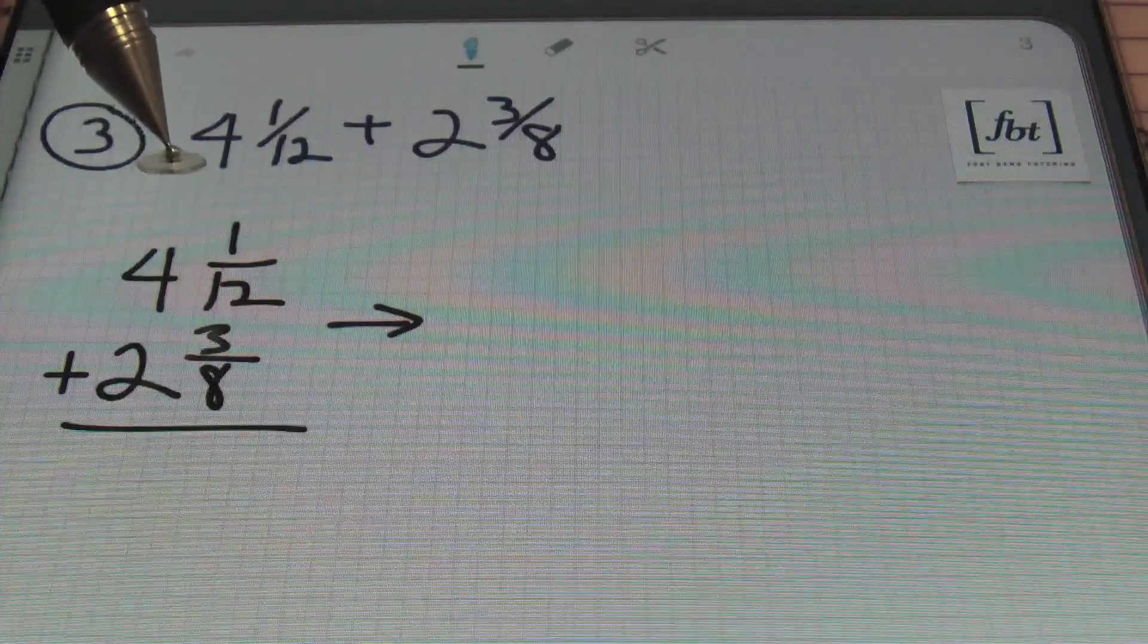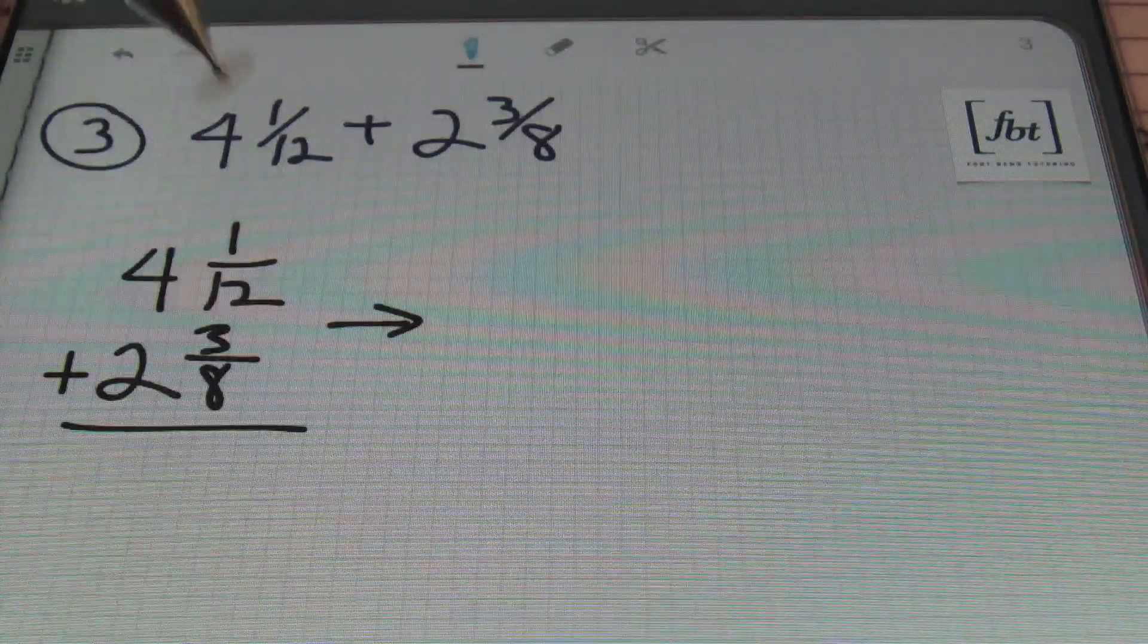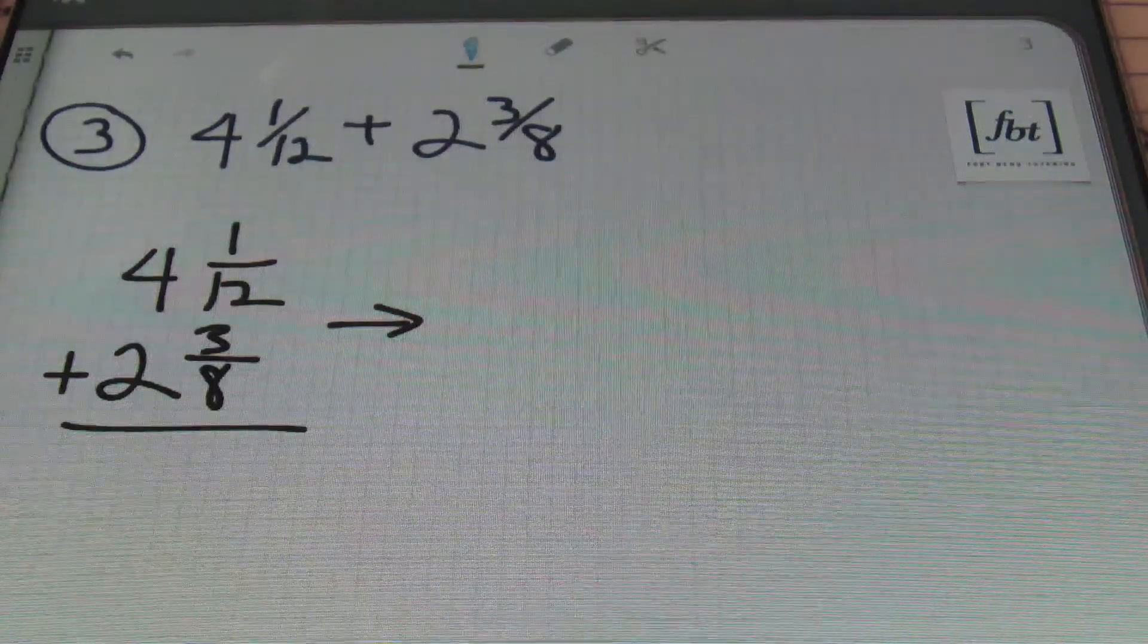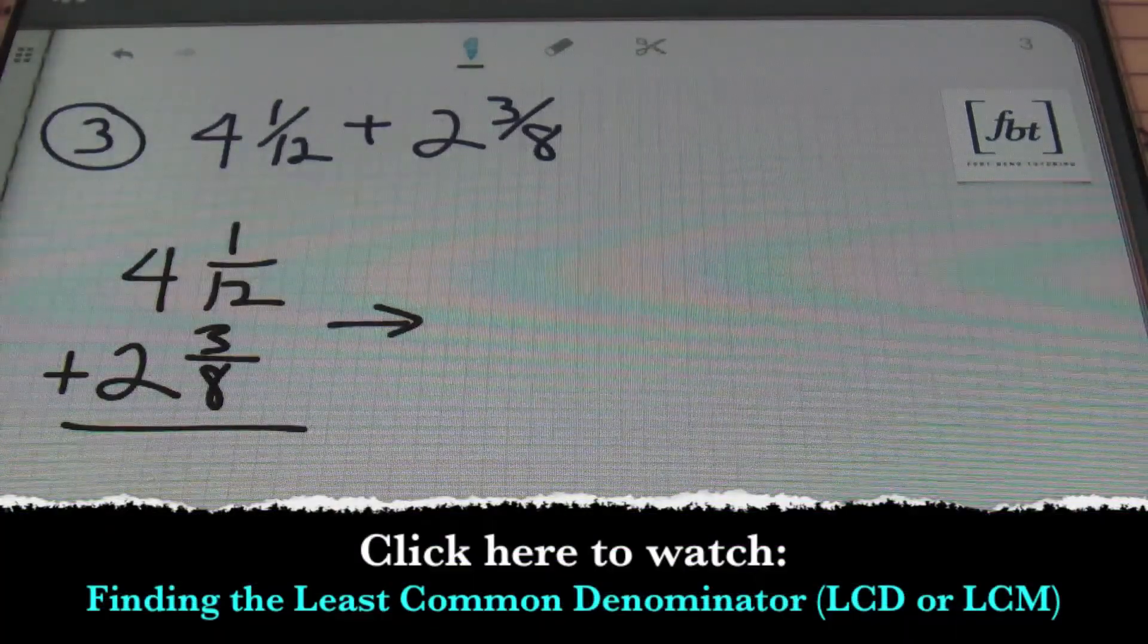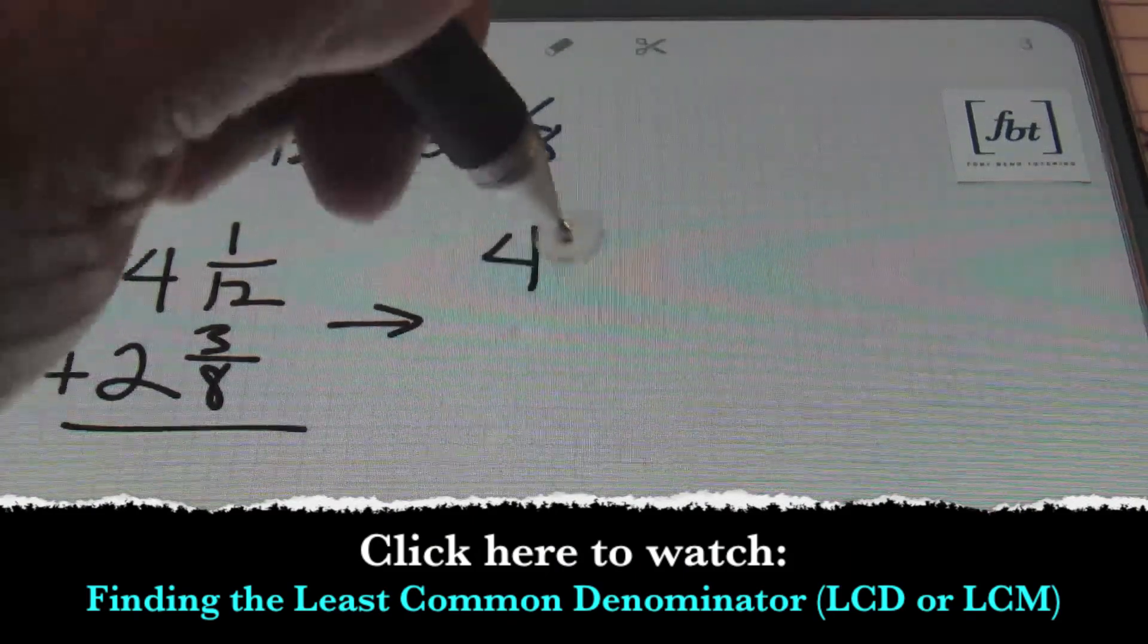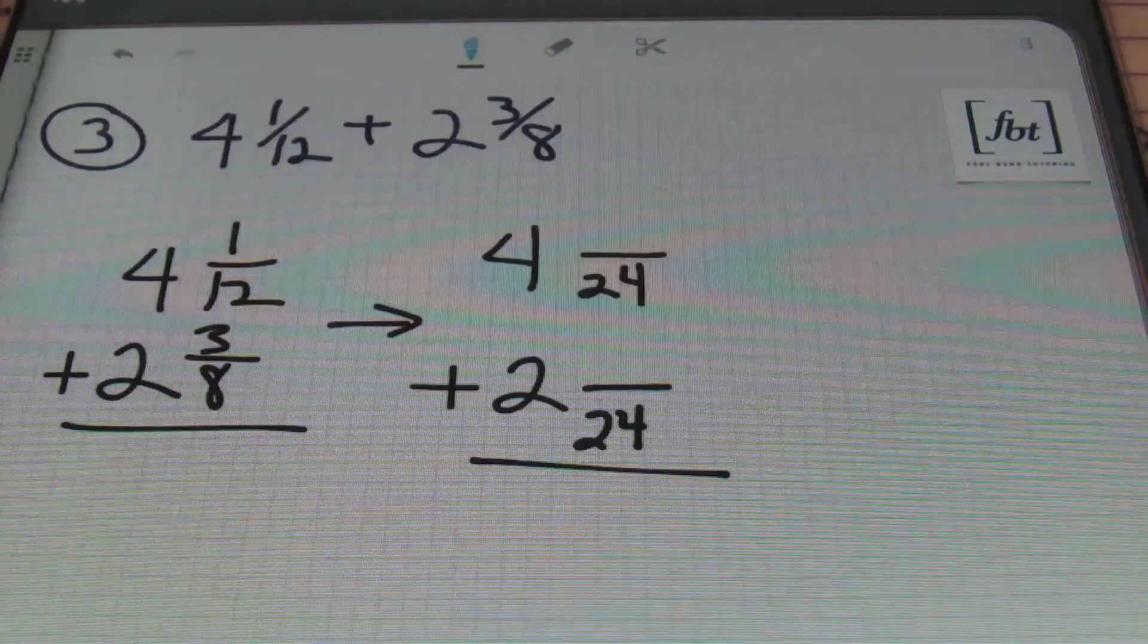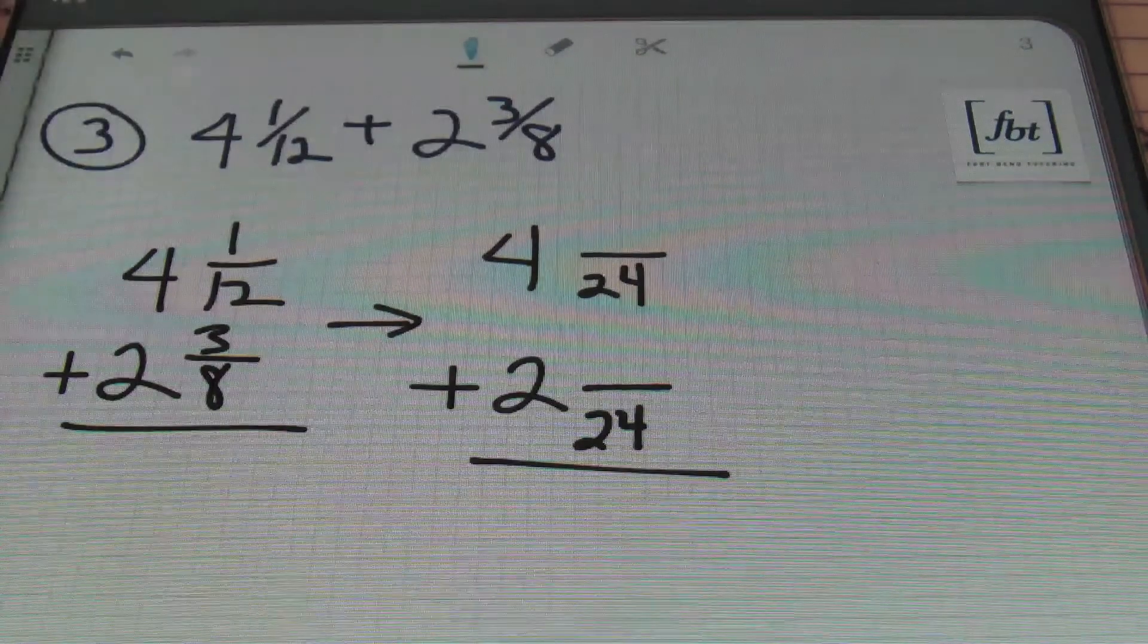If you look at the multiples of 12 we know that 12 times 2 is 24. So that's going to be our LCD because 8 goes into 24 evenly. If you need help finding your lowest common denominator ladies and gentlemen please check out our video finding the LCM and LCD. Alright I'll put a link right down here. So the first number that 12 and 8 can go into evenly that's 24. So I'm going to rewrite this as 4 with denominators of 24 in both of my fractions. Alright so you're going to have denominators of 24 here and we'll need to get equivalent fractions. So 12 was multiplied how many times to get 24?